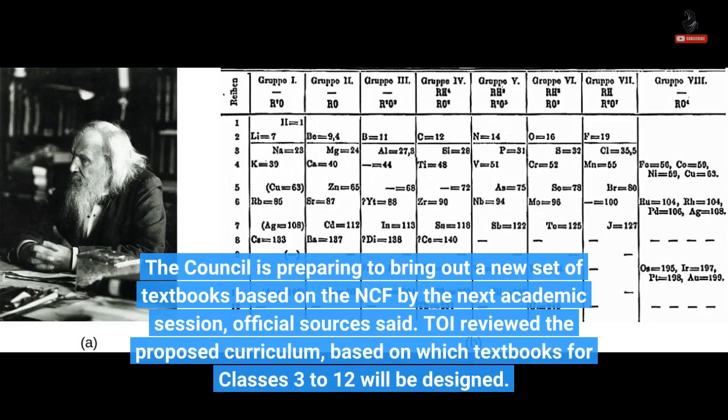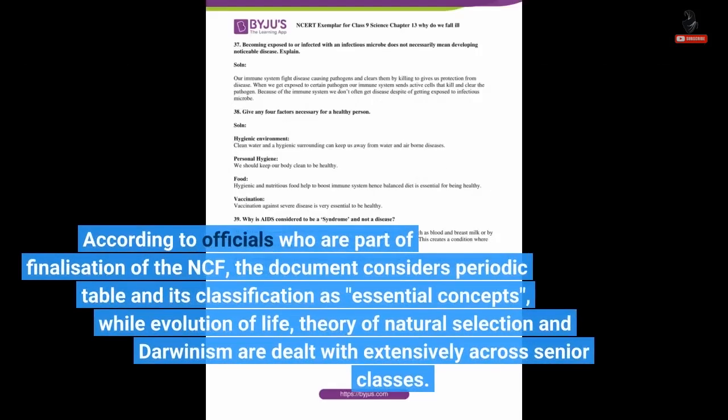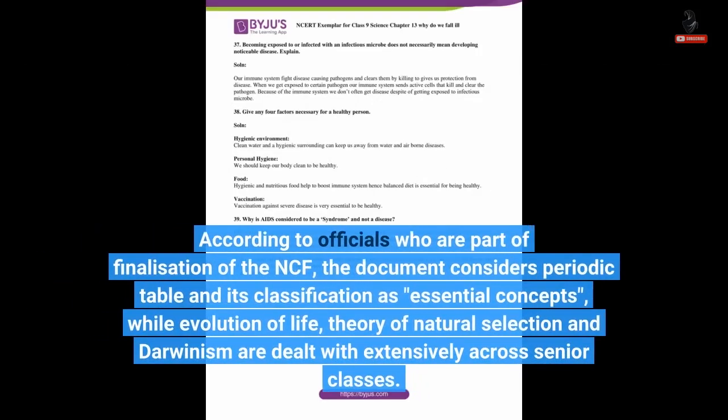TOI reviewed the proposed curriculum, based on which textbooks for classes 3 to 12 will be designed. According to officials who are part of finalization of the NCF, the document considers the periodic table and its classification as essential concepts, while evolution of life, theory of natural selection, and Darwinism are dealt with extensively across senior classes.